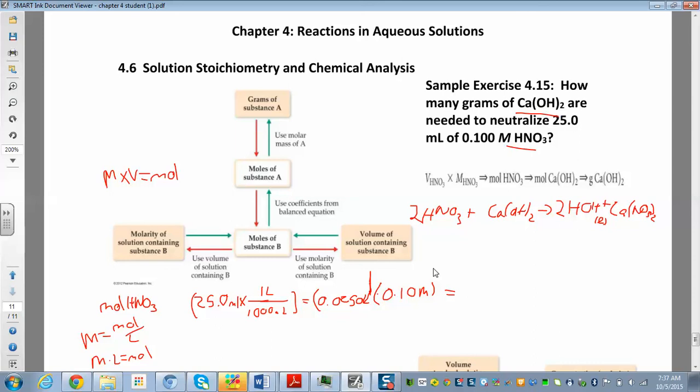So that ends up being 2.5 times 10 to the negative 3 moles of nitric acid.